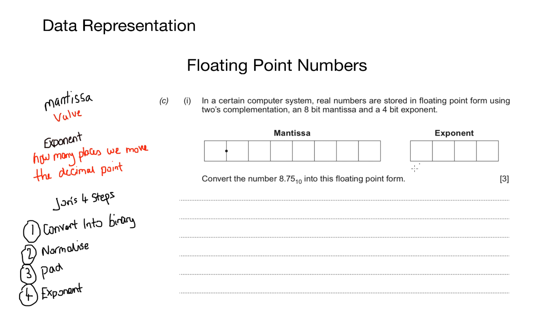So here the question asks: in a certain computer system, real numbers are stored in floating point form using two's complementation, an eight-bit mantissa and a four-bit exponent. Convert the number 8.75 into this floating point form. So the first step here is to convert 8.75 into binary using the shortest amount of bits, and that comes out as 1000.11. Fairly straightforward so far. Step two, we normalize the number by putting a zero and a point in front of our number.